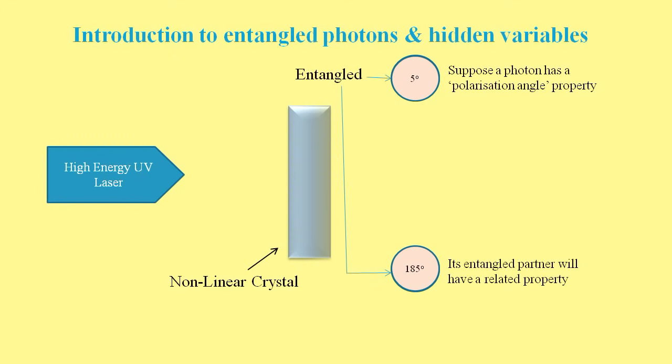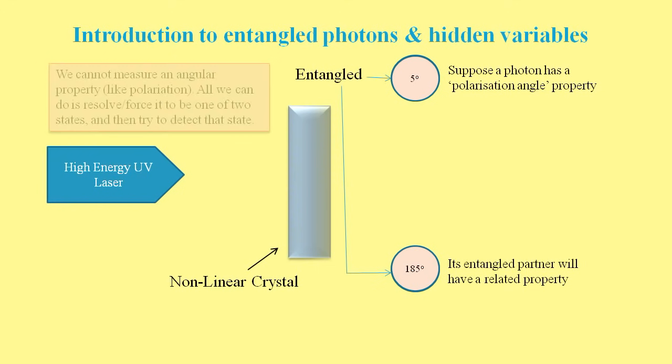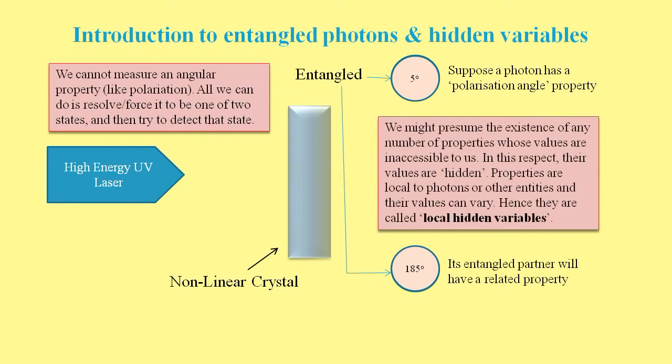Even though we might assume that this property exists, we can't be sure because we've no way to measure it. All we can do is force or resolve it into one of two states and then try to detect that state. So, assuming the polarization angle property exists, its exact value is inaccessible to us as we've no way to measure it. Its value is entirely hidden from us. Such properties are local to photons or other entities and their values can vary. As such, they're called local hidden variables.